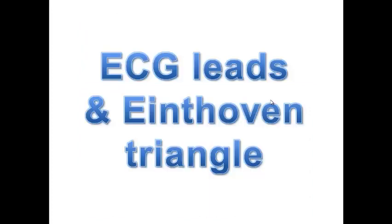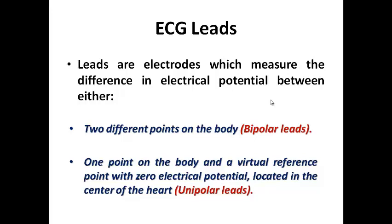To understand the ECG axis, you need to understand the Einthoven Triangle. ECG leads are electrodes that measure the difference in electrical potential between either two different points on the body — called bipolar leads — or between one point on the body and a virtual reference point with zero potential located in the center of the heart, called unipolar leads. So we have bipolar leads and unipolar leads.